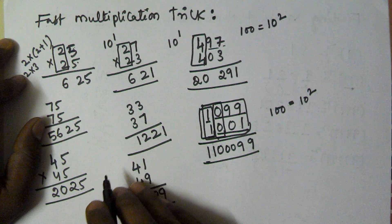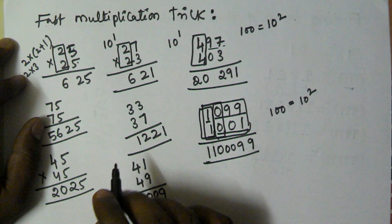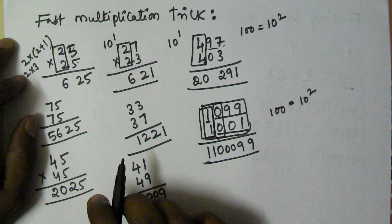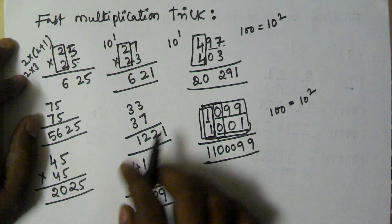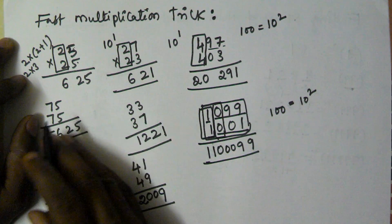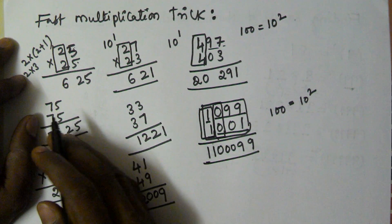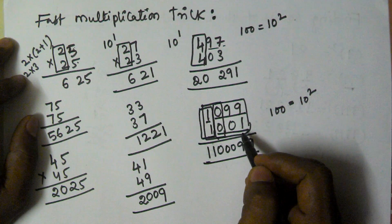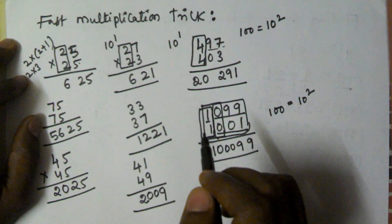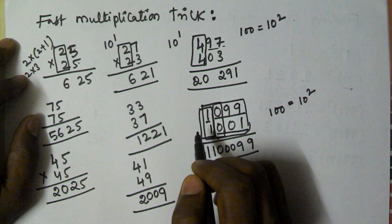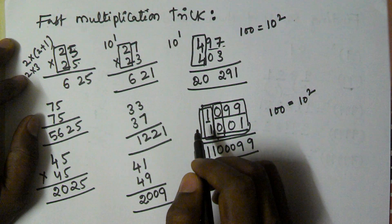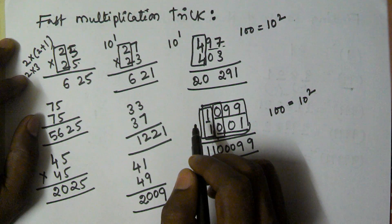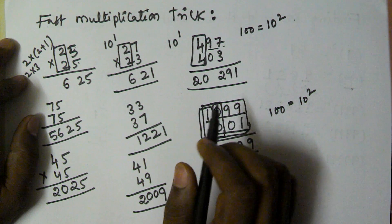So this is the fast multiplication trick. We can use it when the leftmost digits are the same and the sum of the remaining digits is a power of 10. Thank you for watching this video — please subscribe to my channel.